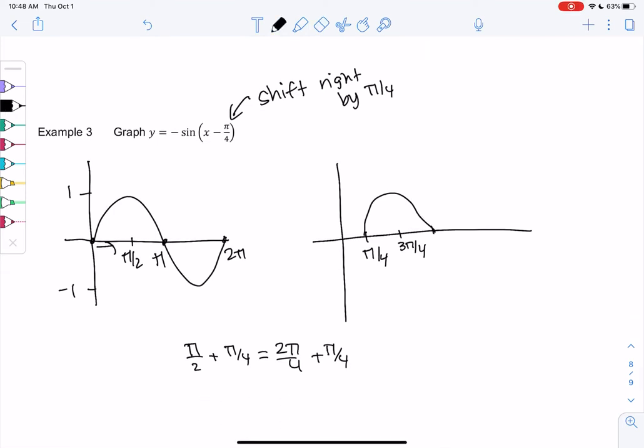So pi over 2 pi is where it goes through, which would be 5 pi over 4. And then we'll go up, and we will end at 2 pi plus pi over 4, which is 9 pi over 4. So that's just shifting everything over by pi over 4. The amplitude hasn't changed. It's still negative 1 to 1, because there's no coefficient.